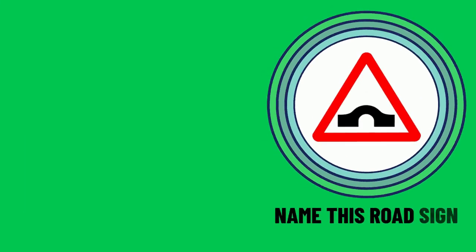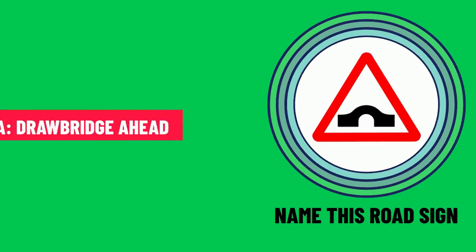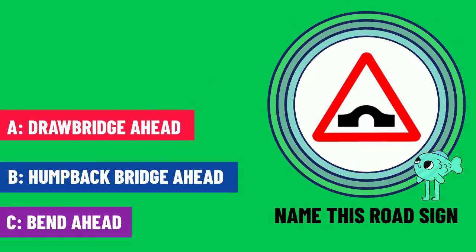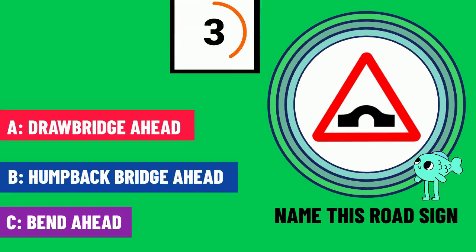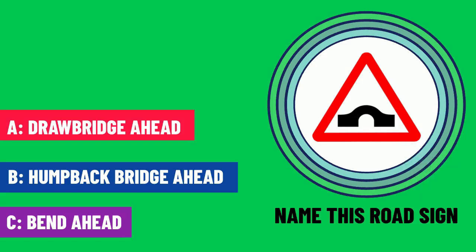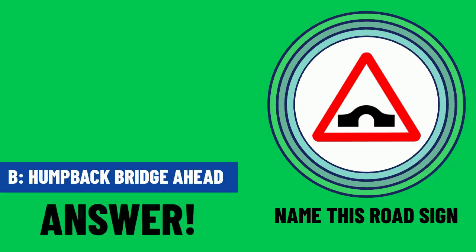Question 3. Name this road sign. The correct answer is B — humpback bridge ahead.